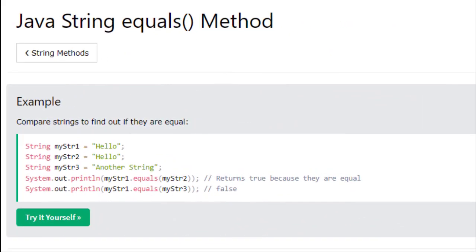We're at the W3Schools website, and we're looking at the equals method for a string. In this example, three string variables are declared. Two contain the same string value. Another contains a different string value. Notice the syntax for the equals method. If you recall, methods are executed using the dot operator, and that method must be attached to an object. This is considered an object.